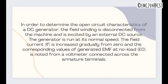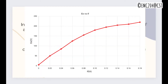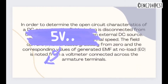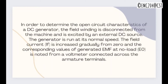From the EMF equation of a DC generator, the generated EMF should be directly proportional to the field flux. However, even when the field current is zero, some amount of EMF is generated. As you can see from the figure, this initially induced EMF is due to residual magnetism in the field poles. Due to this residual magnetism, a small initial EMF is induced in the armature, which aids the existing residual flux and hence increases the overall field flux, leading to an increase in induced EMF.